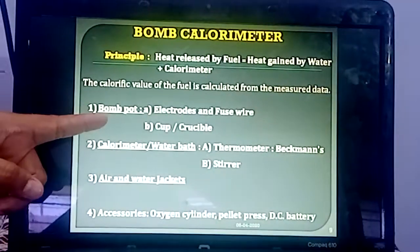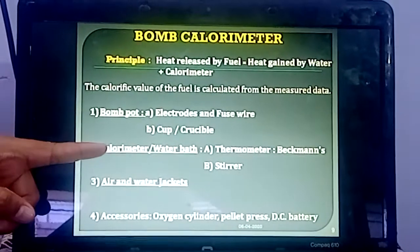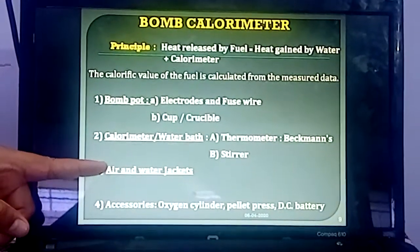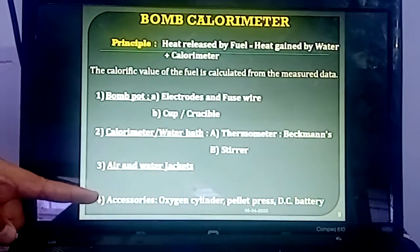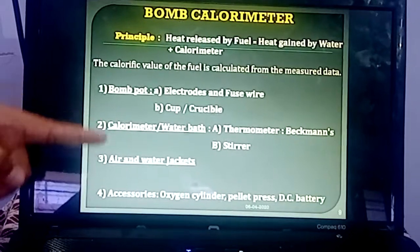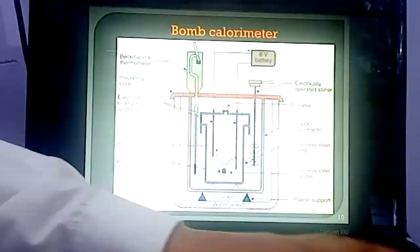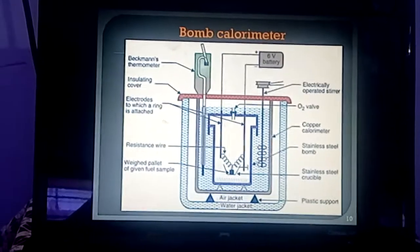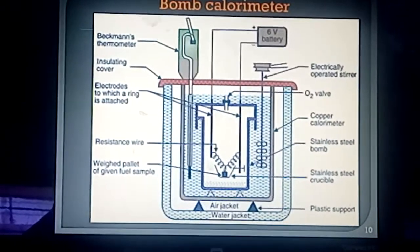The construction part consists of four different parts: number one is the bomb pot, second is the calorimeter, third is the air and water jackets, and fourth is the accessories. Here is the diagram of the bomb calorimeter, and we will go through each part one by one.